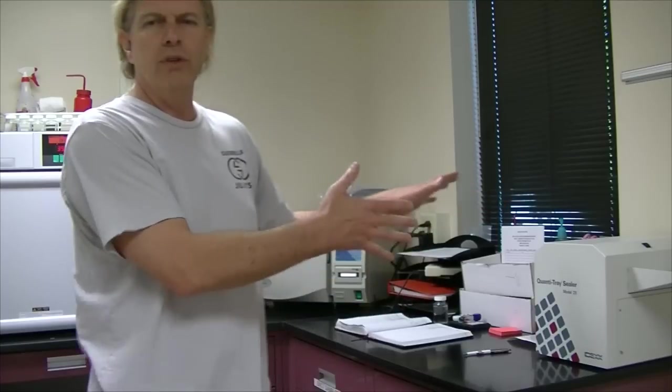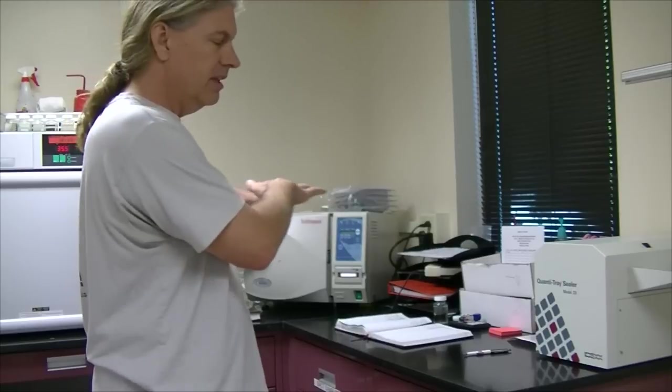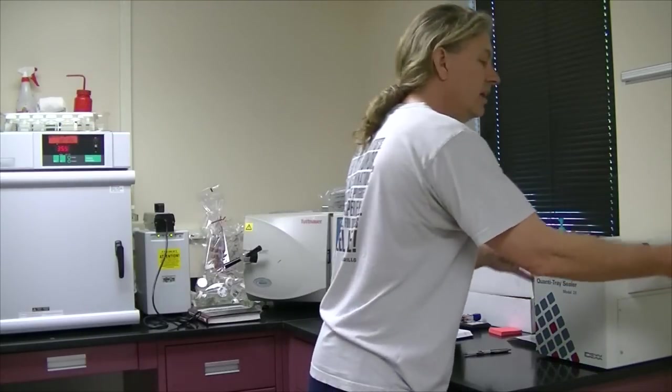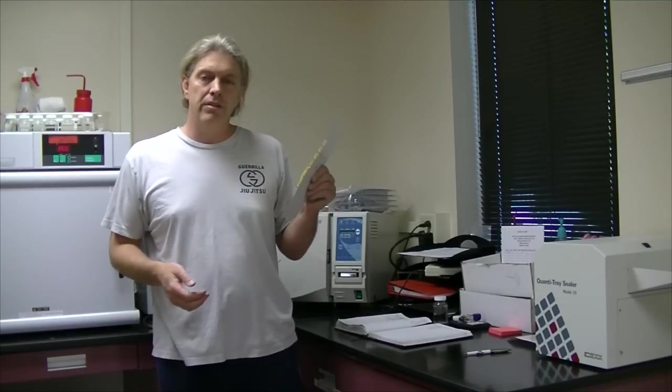You would set it right inside there and you will send it through the sealer. So it goes through kind of like a laminator type machine and it seals the top of that. It seals that shut. It'll come out the other end sealed. You peel it right off, you label it, and you put it in the incubator. Because it is a Colalert method, it's the same thing: 24 hours at 95 degrees or 35 Celsius.